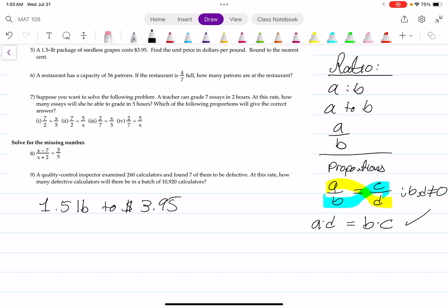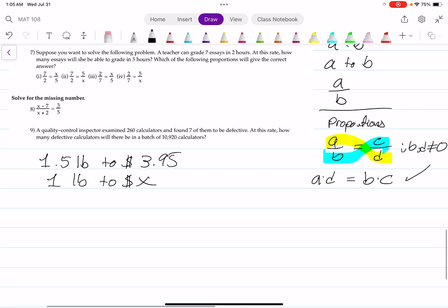Let's find the price of grapes for a single pound. That means we're going to be comparing one pound to X dollars. The units are pounds to dollars for both ratios. Therefore, we can set it up as proportions. That's the first ratio of 1.5 over 3.95, and that's going to equal one pound over X.